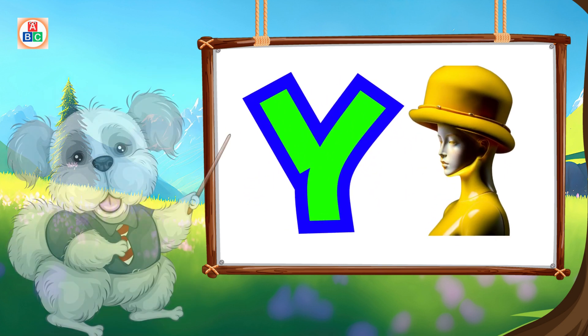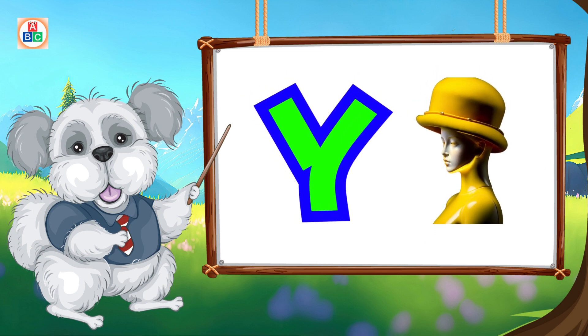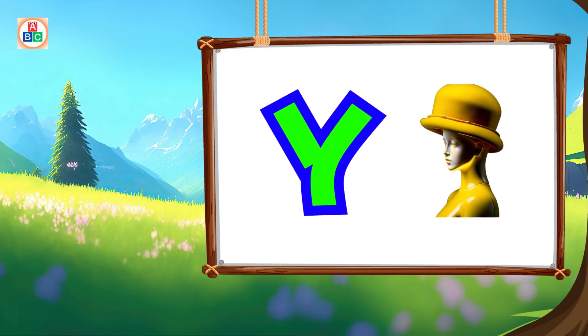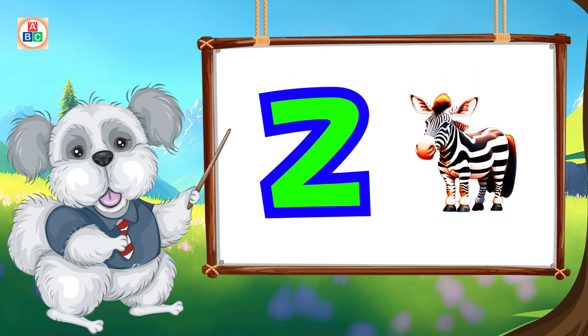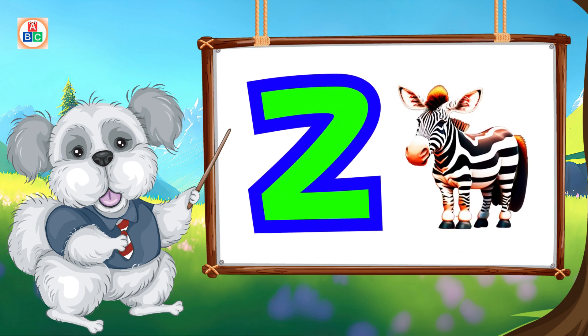Y is for yellow, ye-ye-yellow. Z is for zebra, z-z-zebra.